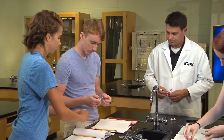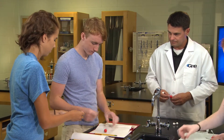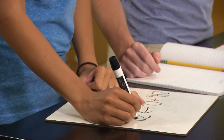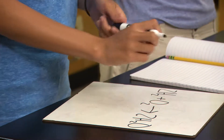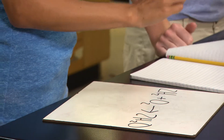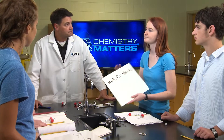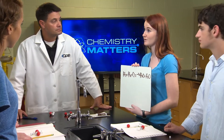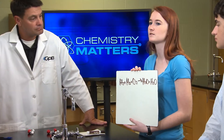We used physical models to demonstrate how chemical reactions occur. We also used balanced chemical equations to demonstrate both the reactants and products of chemical reactions, using both coefficients and subscripts.